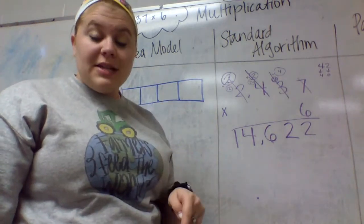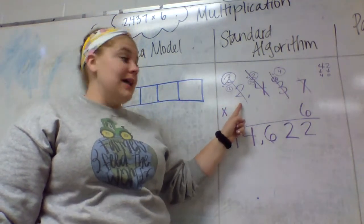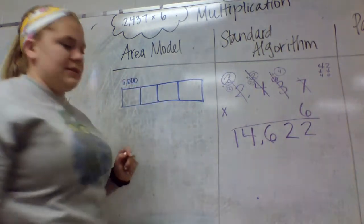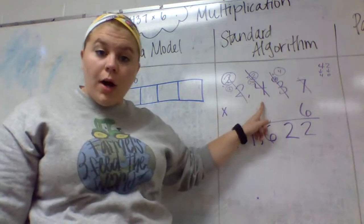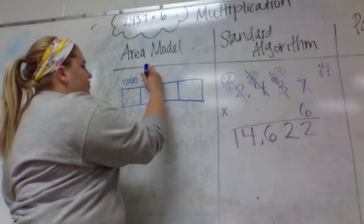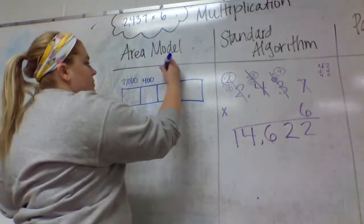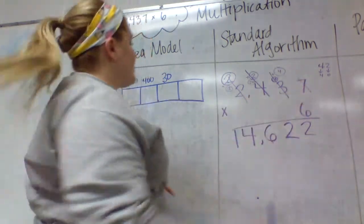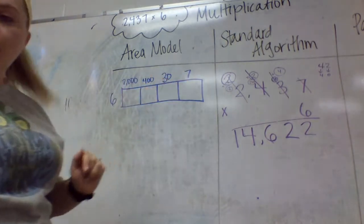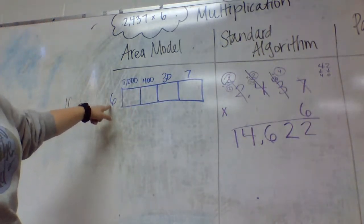Here is where it gets super important that you remember place value. When I'm putting this up here, I can't put a two because that number doesn't really represent a two. It's a two in the thousands place. So instead of putting a two, it will be two thousand. The four. I can't put a four because I have to remember the value of that digit. It's in the hundreds place. So the value is four hundred. I have a three in the tens place. The value of the three is thirty. And then a seven in the ones place. The value of that is seven. I'm multiplying them all by six.